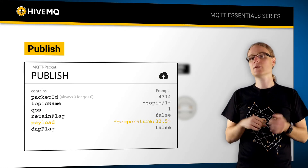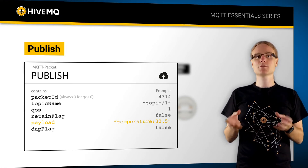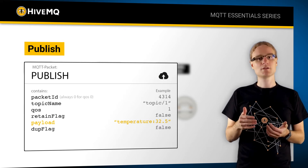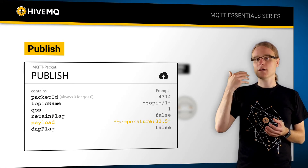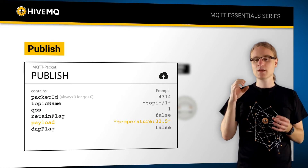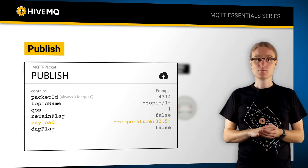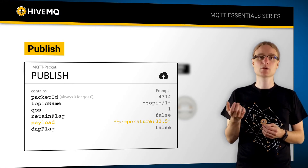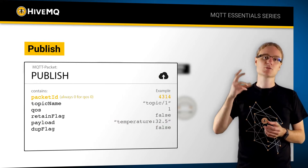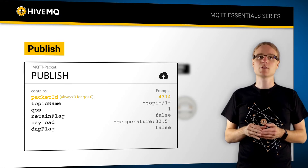Then we have the so-called payload field. The payload field is responsible for carrying all the relevant information, and this could be an image file, an XML file, a JSON file, Google Protocol Buffers, or some arbitrary bytes you decide to send. We also have some other flags the protocol requires, like the duplication flag and the packet ID, which are really for the protocol flows and need to be carried over a publish packet.